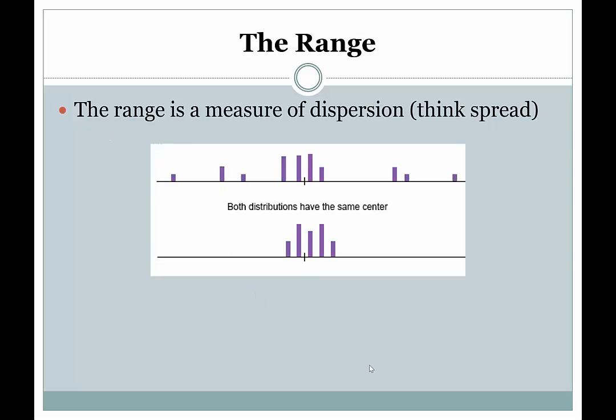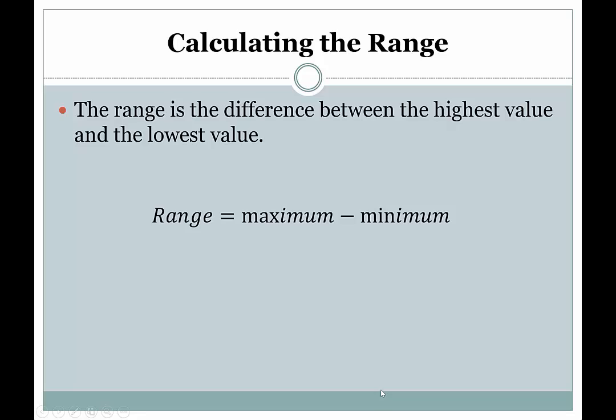So the range is our simplest measure of this, and the way to calculate the range is really simple. It's just the maximum value in your dataset minus the minimum value in your dataset. So in other words, the highest value minus the lowest value. And that is the range.